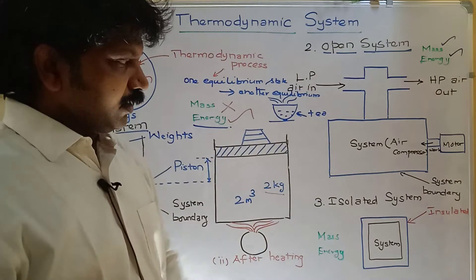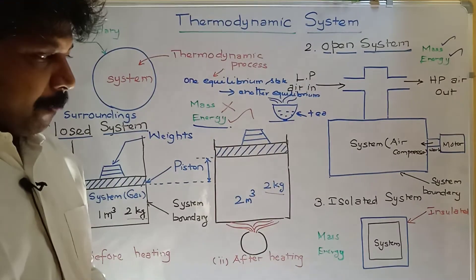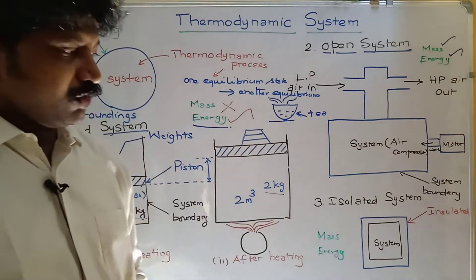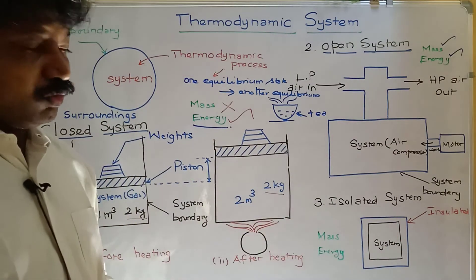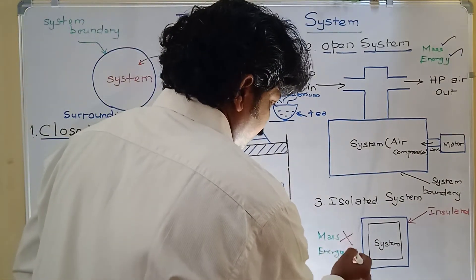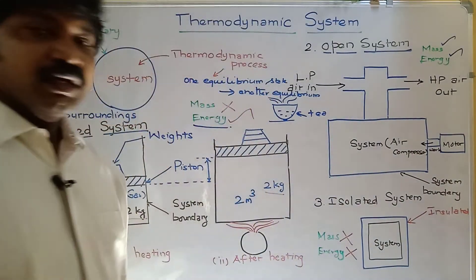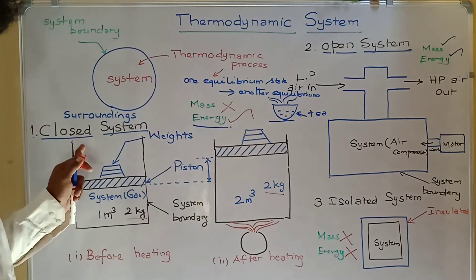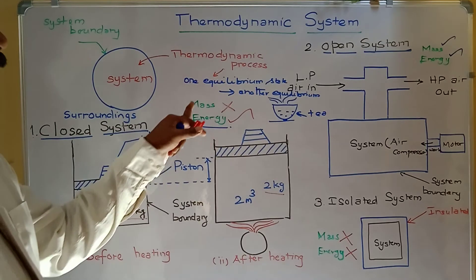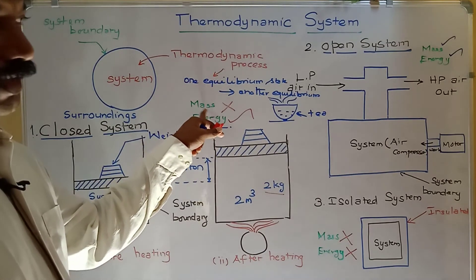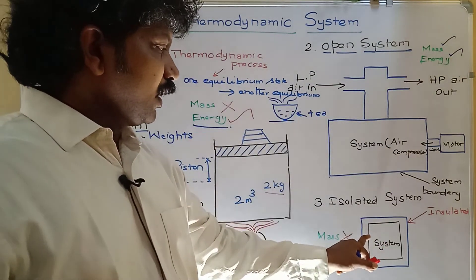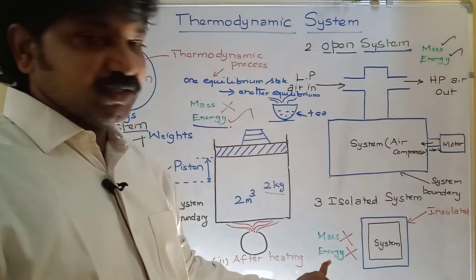In an isolated system, the system is insulated from surroundings, so no mass and no energy transfer will occur. To summarize: in a closed system, only energy transfer occurs; in an open system, both mass and energy transfer occur; in an isolated system, no mass and no energy transfer occurs.